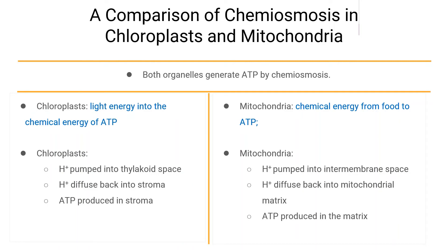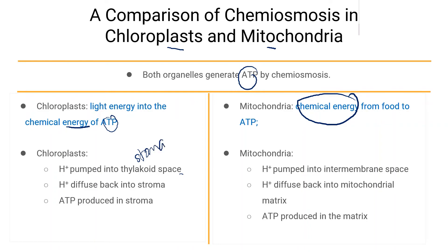Shown in the table is a comparison of chemiosmosis in chloroplasts and mitochondria. Both organelles regenerate ATP by chemiosmosis. In chloroplasts, light energy is converted into chemical energy in the form of ATP. In mitochondria, chemical energy from food is used to produce ATP. In chloroplasts, protons are pumped into the thylakoid space from the stroma, then diffuse back through ATP synthase, triggering ATP synthesis in the stroma.